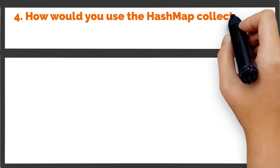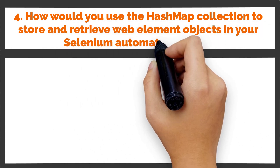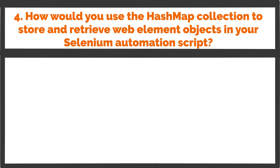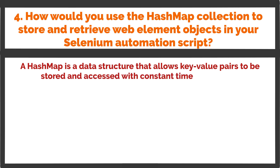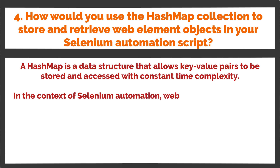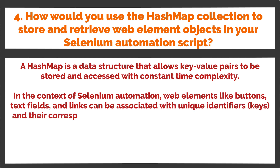Question 4: How would you use the HashMap collection to store and retrieve web element objects in your Selenium automation script? A HashMap is a data structure that allows key-value pairs to be stored and accessed with constant time complexity. In the context of Selenium automation, web elements like buttons, text fields, and links can be associated with unique identifiers as keys, and their corresponding object references as values, and stored in a HashMap.